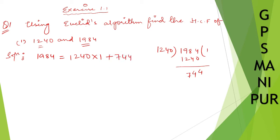Now again, write down this number 1240. Here, you are going to write 744. Now divide by 744 to 1240. If you subtract this number, you get 496. So 744 into 1 plus 496.